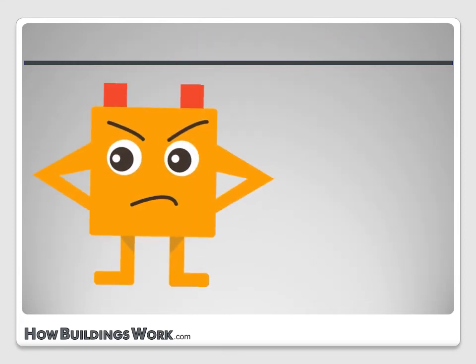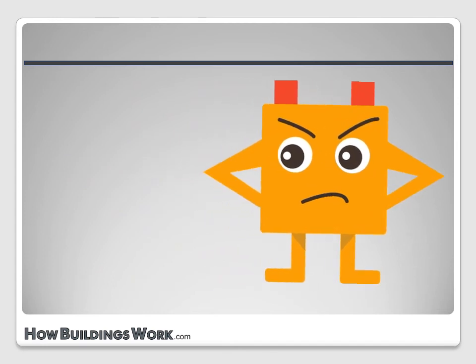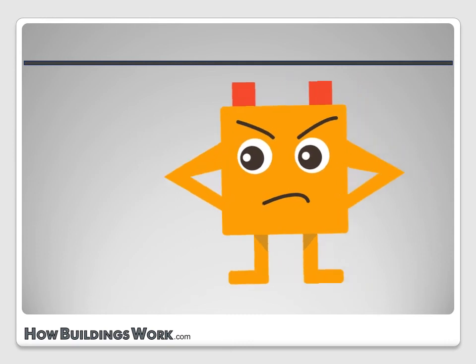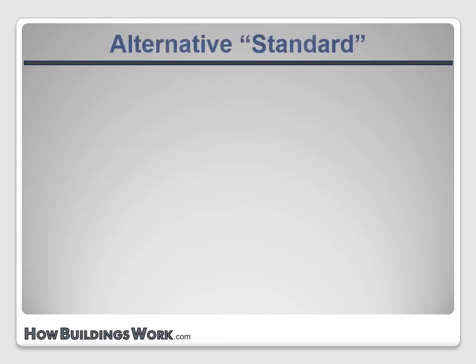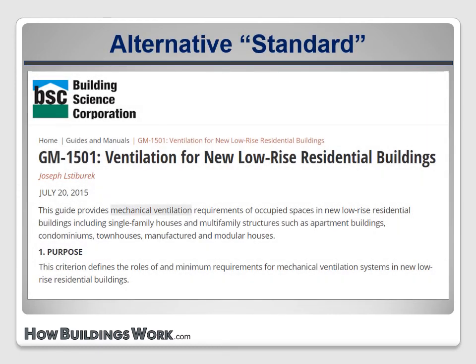And some people don't like ASHRAE 62.2 at all. There's a significant contingent of the building science community that thinks the required ventilation rates in the latest versions of this standard are too high, and they don't like that it doesn't take into account the advantages and drawbacks of different ventilation system designs. One result of this is the release of a competing document by Building Science Corporation — it's called a guide rather than a standard, and no big national program has adopted it as of early 2017, but it certainly raises some interesting questions. The building codes have not adopted the newer ASHRAE calculations, which is another indication of disagreement with this approach. It's a fascinating debate, and if you want to learn more, get on the internet and start searching.